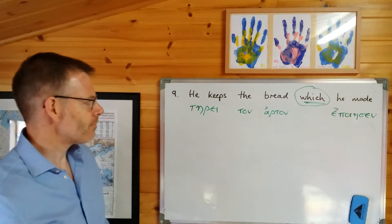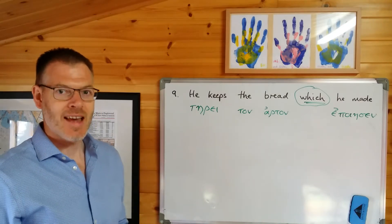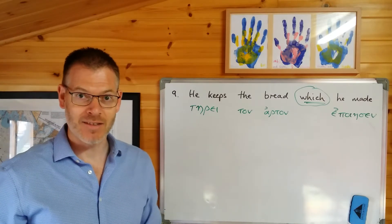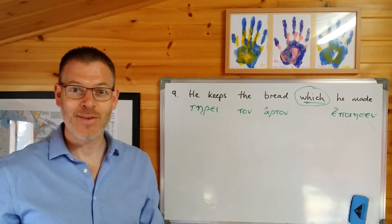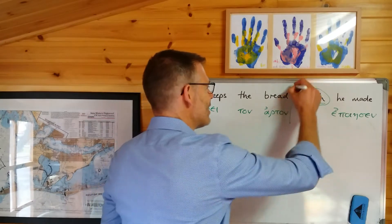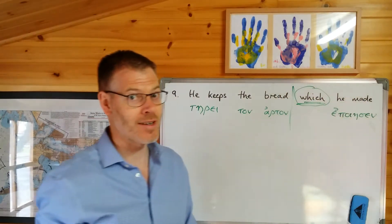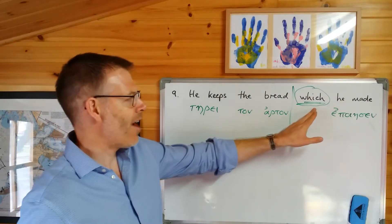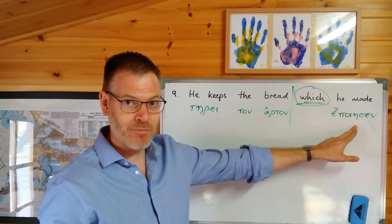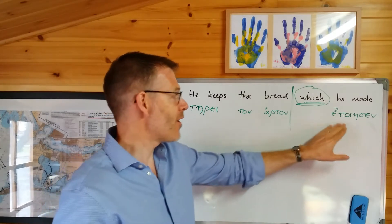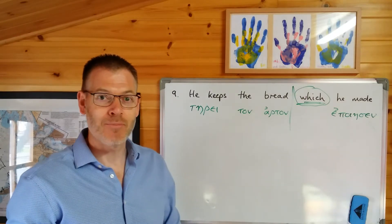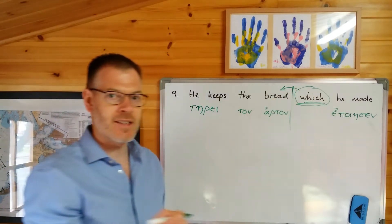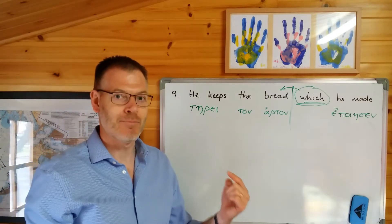Now we need to work out the relative pronoun. Remember: the case of the relative pronoun is determined by its function in its own clause — the relative clause — just like anything else that declines according to case. Then the number and the gender are determined by matching with its antecedent in the previous clause.